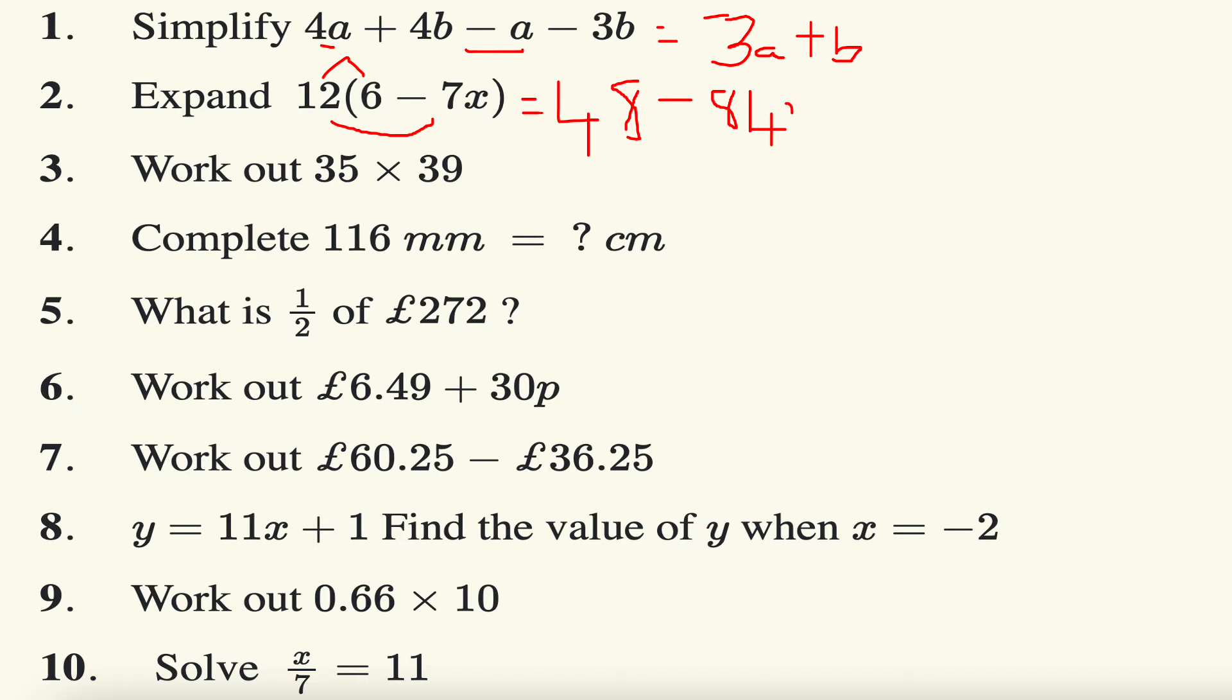The next one, 35 times 39, well that's multiplying numbers, two digit by two digit. Five nines are 45, carry the four, nine times three is 27 and the four is 31. Put the zero there. Three fives are 15, carry the one, three threes are nine, add the one is equal to 10.